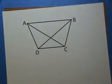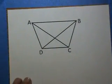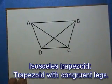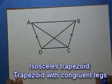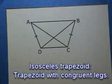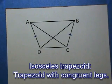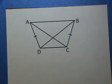This is an isosceles trapezoid. In an isosceles trapezoid, the legs are congruent. So that's basically the definition of an isosceles trapezoid. It's a trapezoid where the legs are congruent. Now, there are some other properties of an isosceles trapezoid.